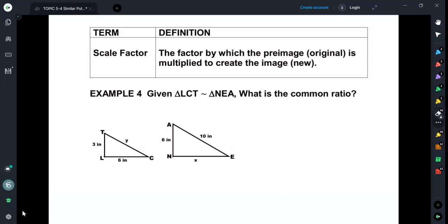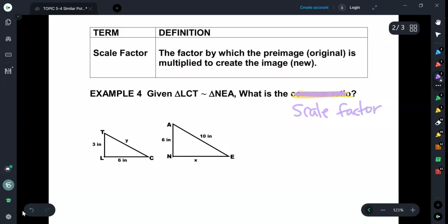Now, it says common ratio here. I'm actually going to cross this out because I want us to focus on the scale factor. Common ratio and scale factor are different, and for our course we're going to focus on the scale factor more. You can get the scale factor and the common ratio mixed up because a ratio and a factor are two different things. A ratio is a comparison of two values, like 2 to 3.